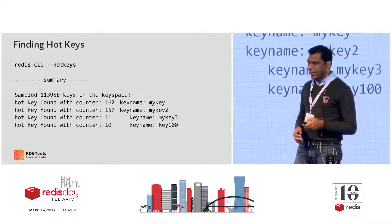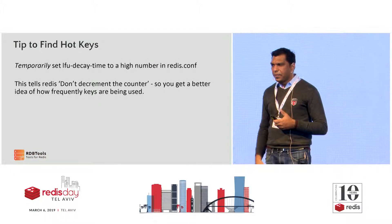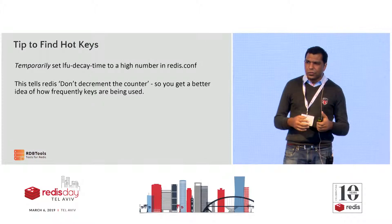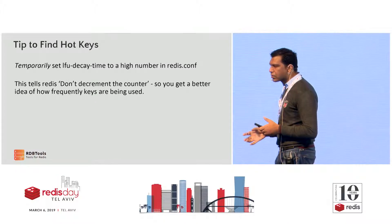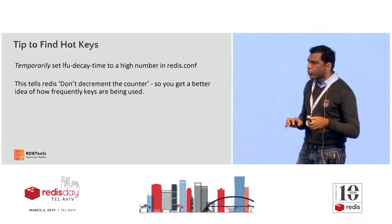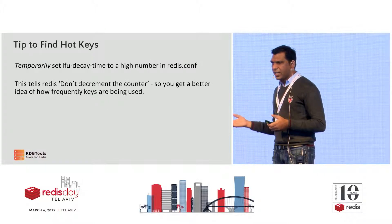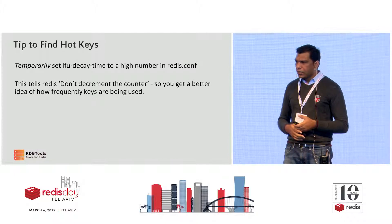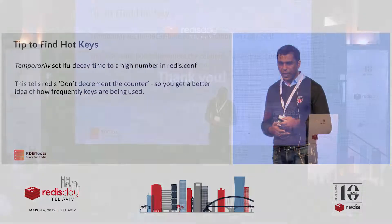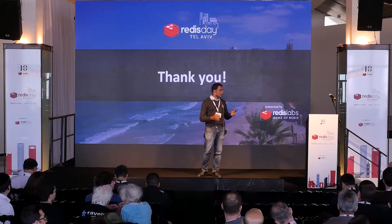There are a couple of ways to get this data. One catch: the frequency is decremented every one minute. So if you're trying to find your application hotspots, it's a good idea — at least in your development or QA environment — to set the decay factor to a very high number so Redis essentially does not decrement the keys anymore. With this, you will get a better sense of what your hotkeys are and how to work with them. That's about it — happy to take any questions or we can break for lunch.